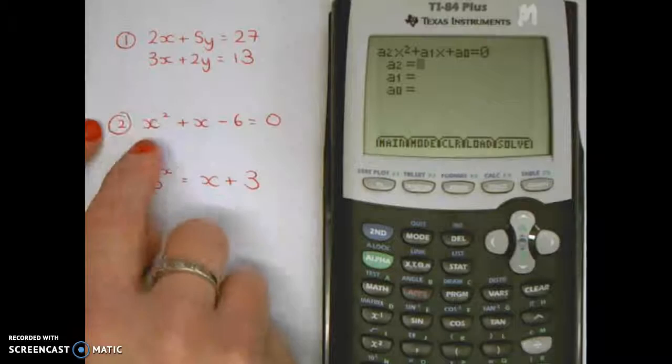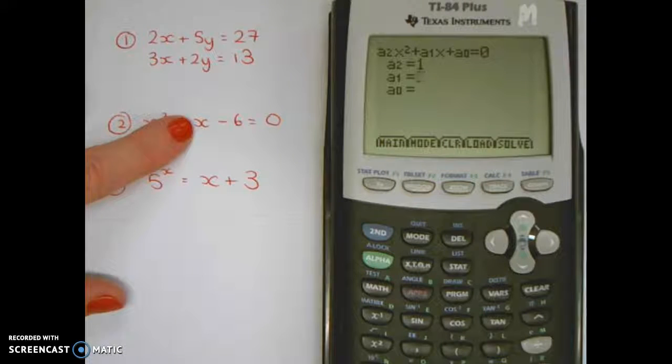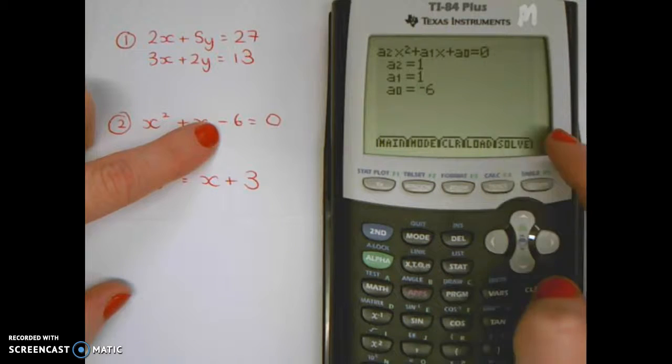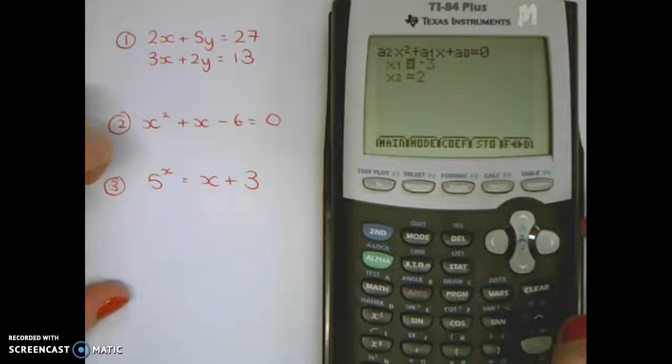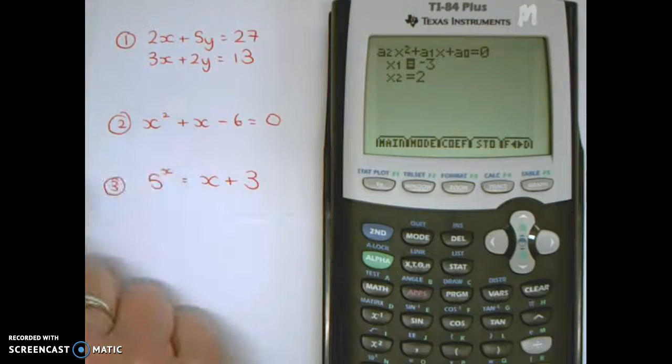Then you're typing in the coefficients. For a2, the coefficient is one. For a1, the coefficient is one. The last coefficient is minus six. Once you've got that in, solve will give you your two answers for x as minus three and two.